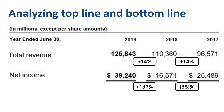There are two ways to start analyzing this: working our way down the income statement from revenue through gross margin through operating income, or working our way up the income statement from net income. Let's see what shows up if we go up the income statement starting from the bottom line.